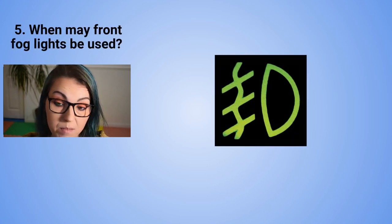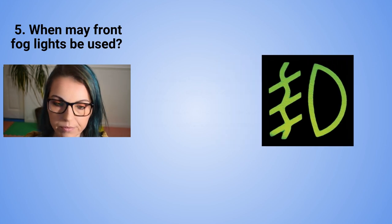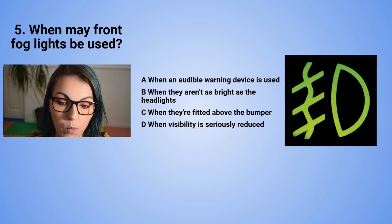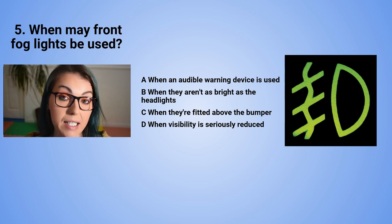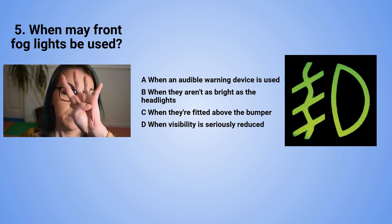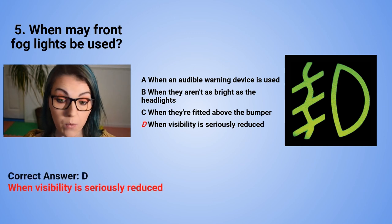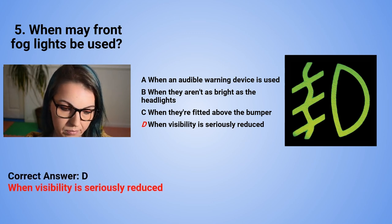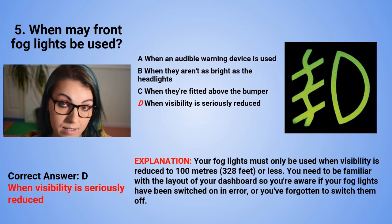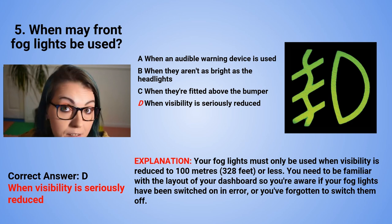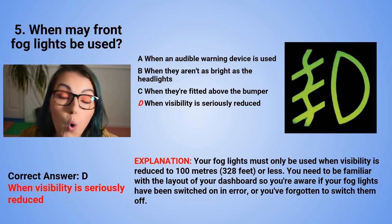Question 5: When may front fog lights be used? A. When an audible warning device is used. B. When they aren't as bright as the headlights. C. When they are fitted above the bumper. Or D. When visibility is seriously reduced. The correct answer is D — when visibility is seriously reduced. Your fog lights must only be used when visibility is reduced to 100 metres (328 feet) or less. Be familiar with your dashboard layout so you're aware if fog lights are switched on in error or you've forgotten to switch them off.